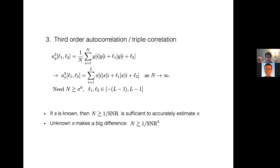Similarly, the third-order autocorrelation multiplies the long measurement Y with two of its shifted copies by L1 and L2, restricting L1 and L2 to be within the length of the short signal X. Because we multiply three copies of the noisy measurement, we need N to scale as sigma-to-the-sixth in order to accurately estimate the third-order autocorrelation of signal X.